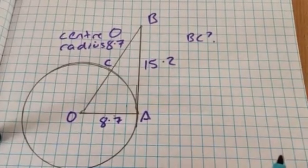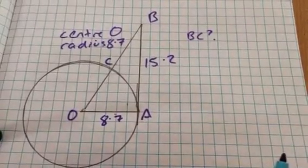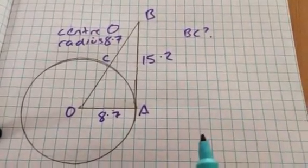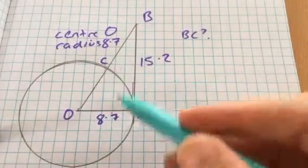Hello and welcome to Martin Maths. We're just doing some questions to practice our maths using circles, Pythagoras, and we've got a circle, center O, radius 8.7.